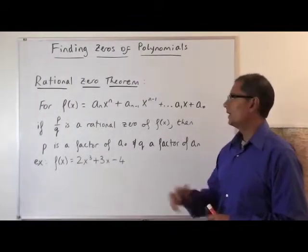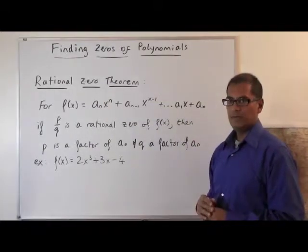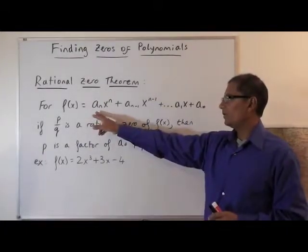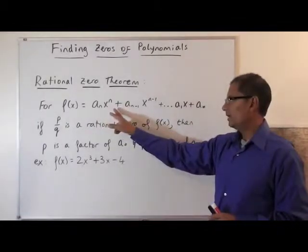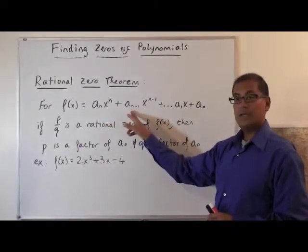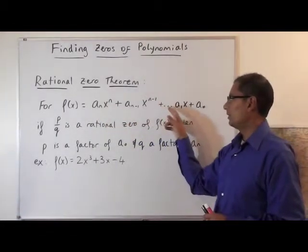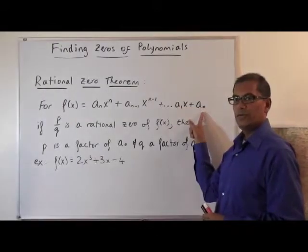The first theorem we want to look at is called the rational zeros theorem. And what that says is if you have a polynomial aₙ times x to the n plus aₙ₋₁ times x to the n minus 1 all the way to the constant term a₀.